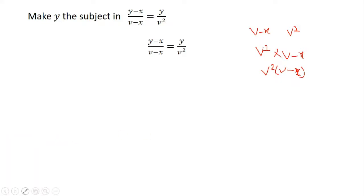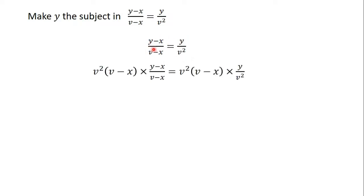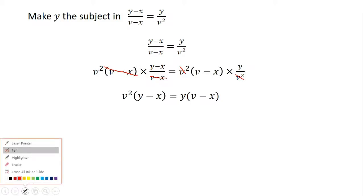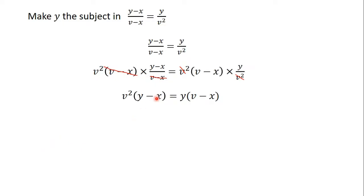So after you have found the LCM, the next thing you do is multiply the LCM with each term in the equation. This is one term and this is another term. You multiply the first term by the LCM, which is v squared into bracket (v minus x), and you multiply the second term by the LCM as well. Now you do the cancellation: (v minus x) cancels (v minus x), and v squared cancels v squared. So you are going to have v squared times (y minus x) — that is, v squared into bracket (y minus x). I have explained why we put (y minus x) in brackets because it is a binomial being multiplied by a single term, which is v squared.